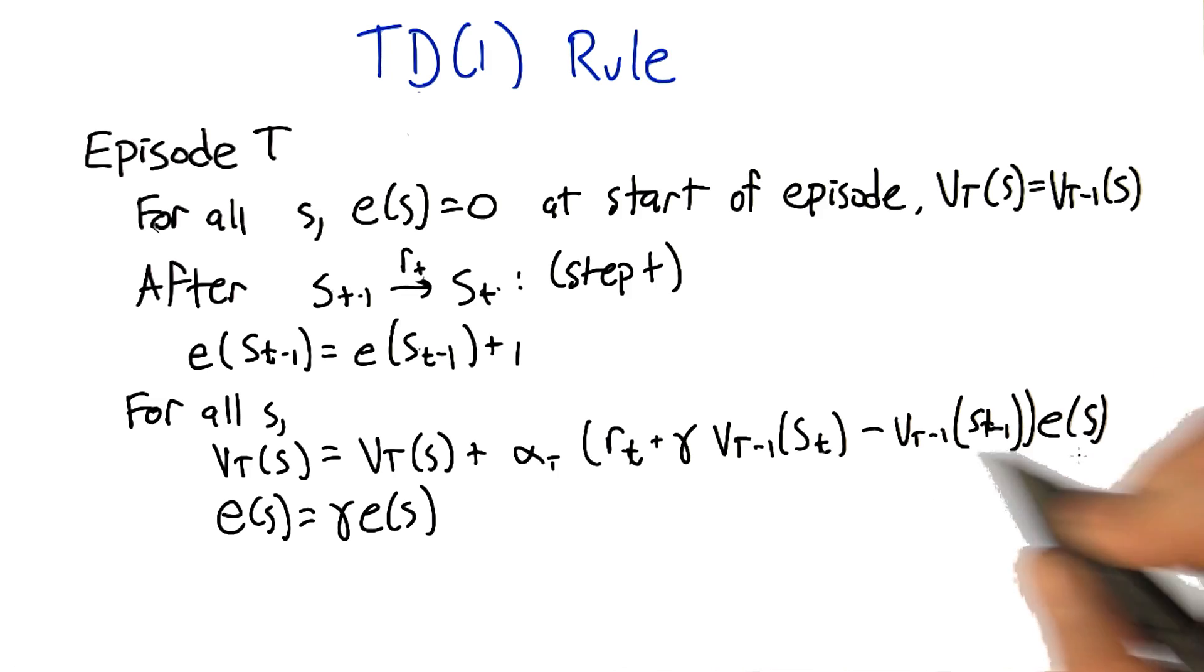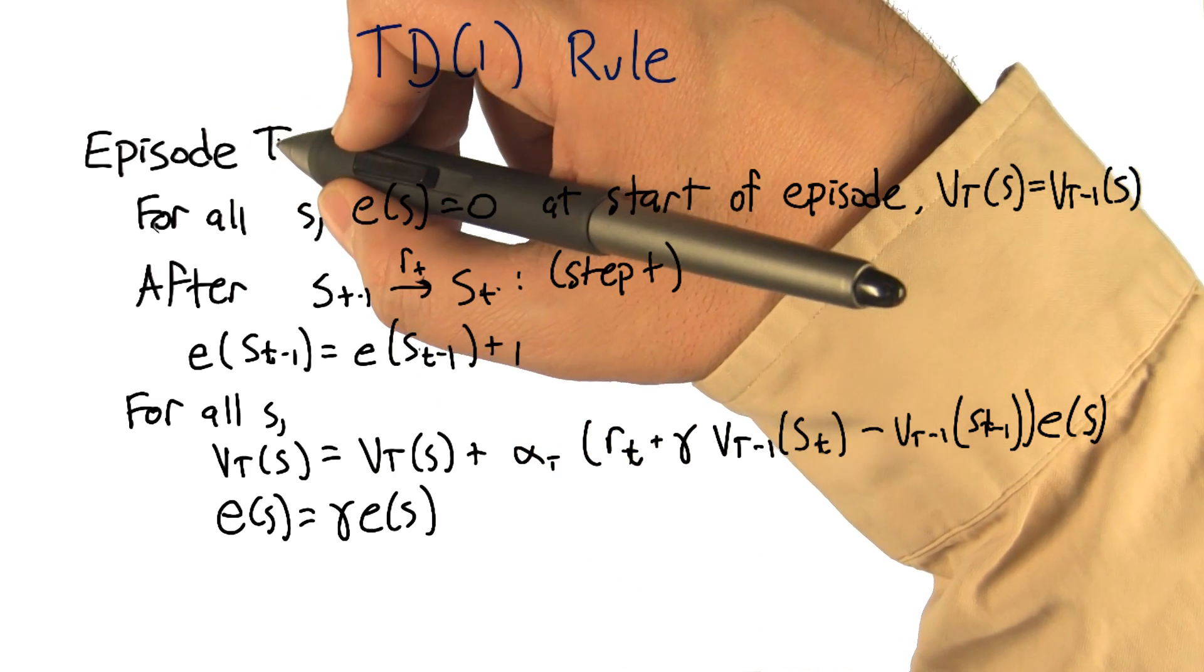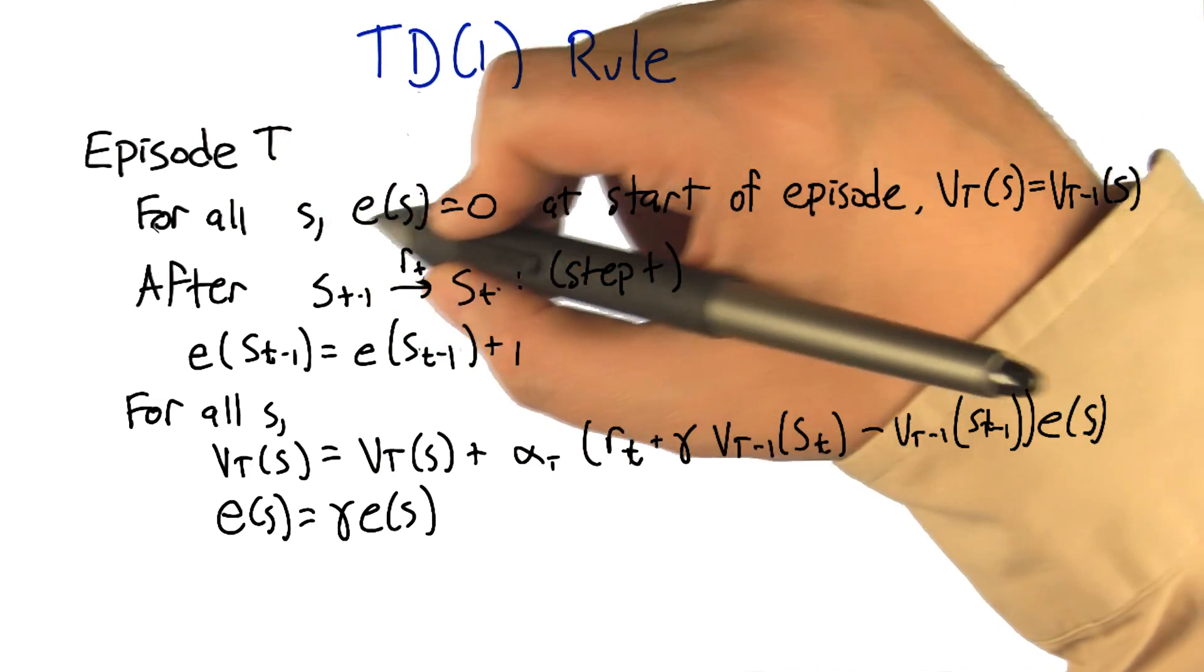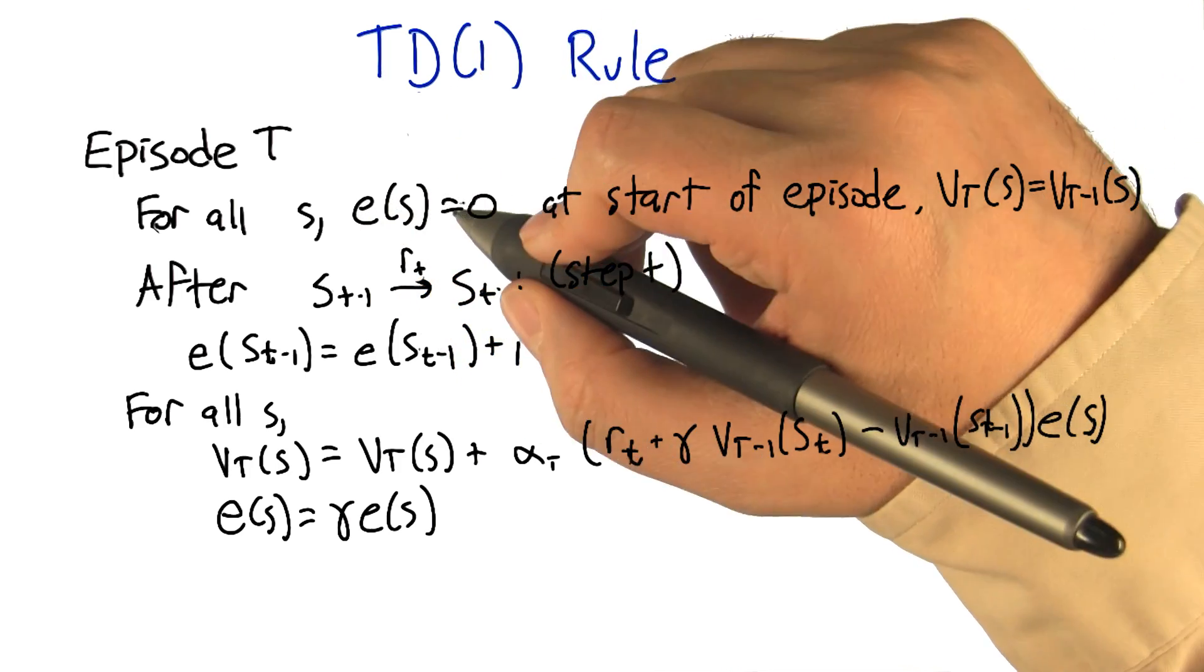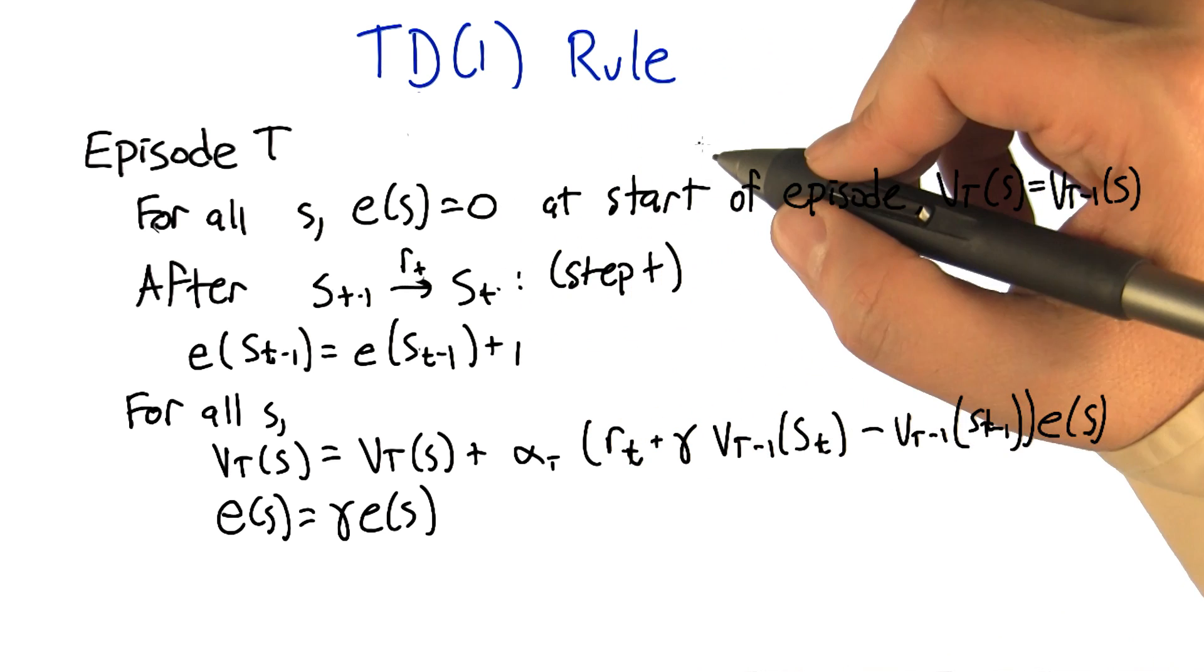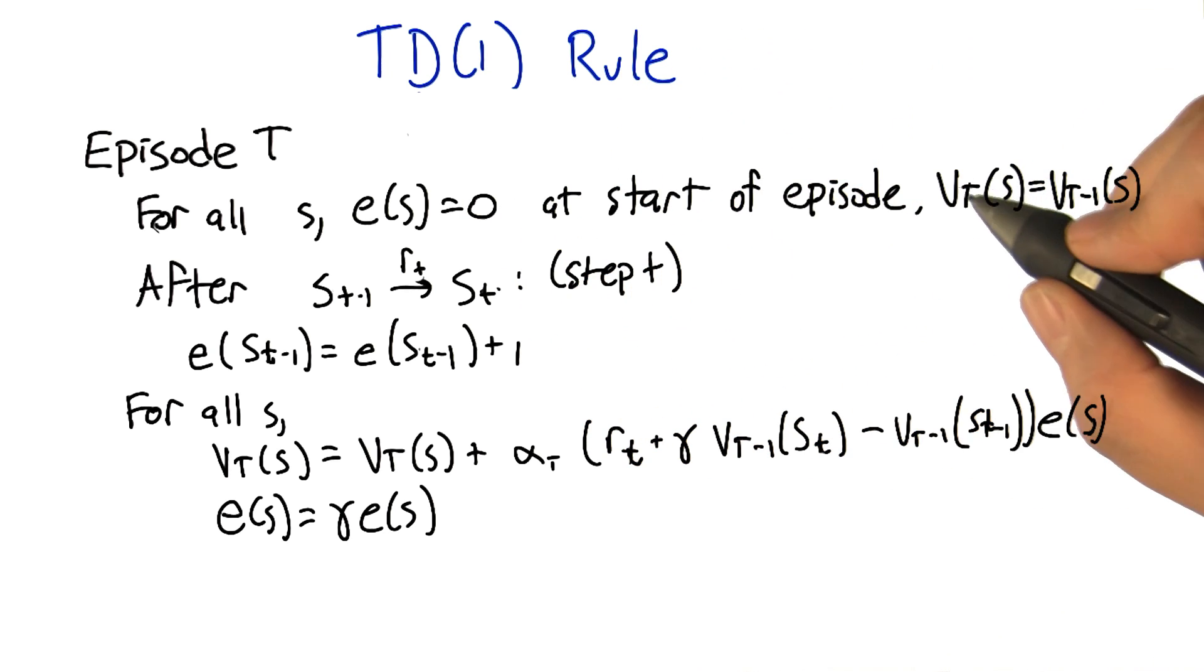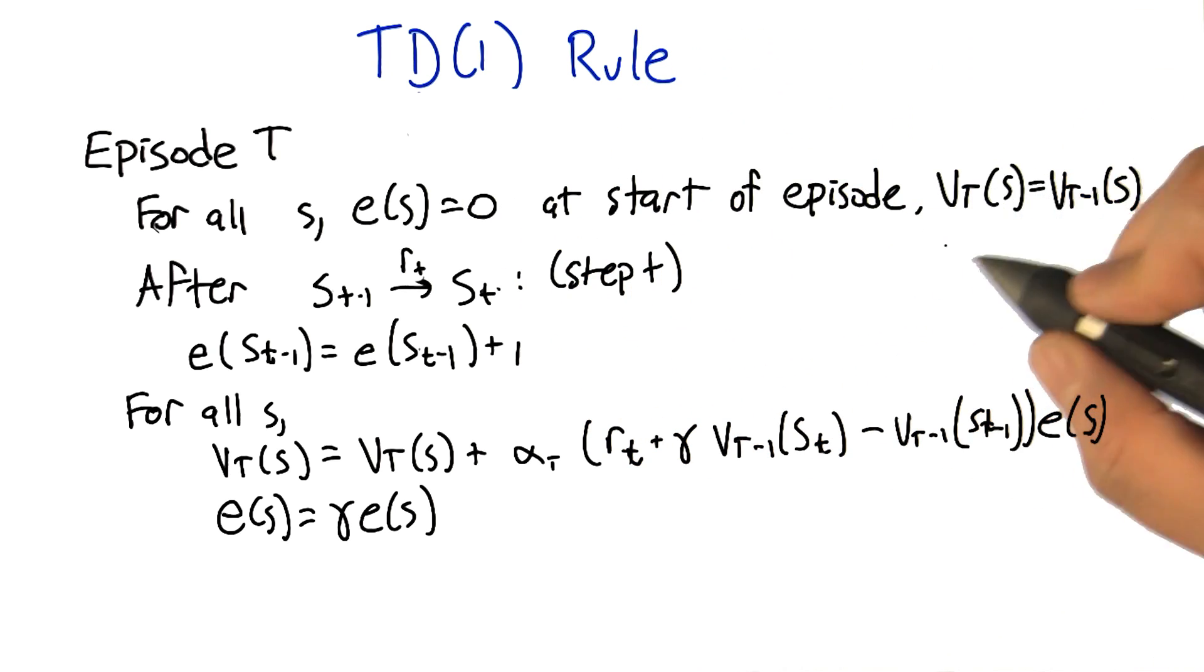So this is the structure of the rule of TD(1). For each time we start a new episode, we're going to initialize this thing called the eligibility E(S) for all the states to 0. We just start them off as ineligible at the start of the episode, and we start off our estimate for the value function for this episode to be initialized to whatever it was at the end of the previous episode. That makes sense.